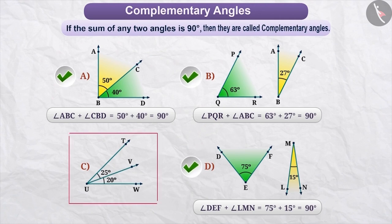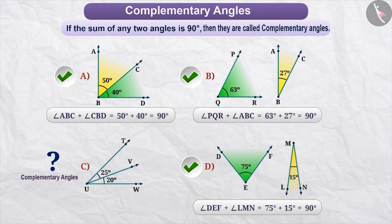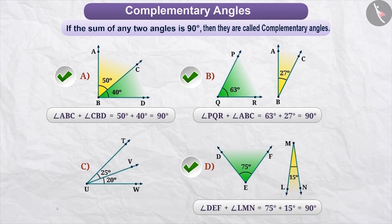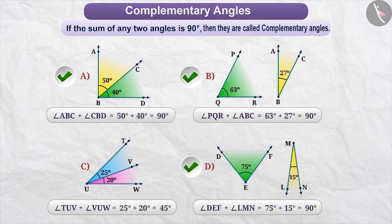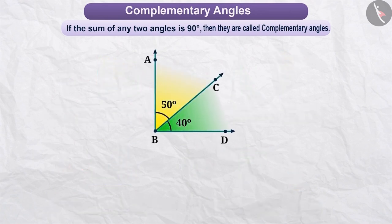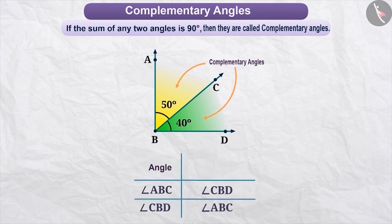Now, by looking at the angles given in figure 3, can you tell if they are complementary angles or not? Angle TUV plus angle VUW is equal to 25 degrees plus 20 degrees, which is equal to 45 degrees — less than 90 degrees. Therefore, this is not a complementary angle. In figure 1, angle ABC and angle CBD are complementary angles. When two angles are complementary, each angle is called a complement of the other.